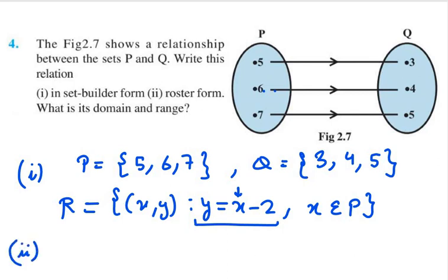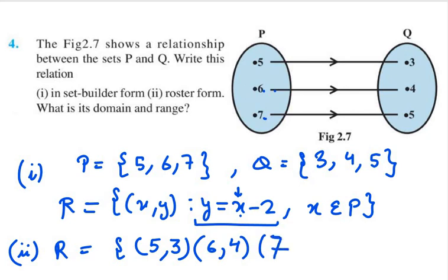Now the second is roster form. Roster form will be in ordered pairs. So when I take x as 5, my y will be 3. 5 minus 2 is 3. The next, if I take x as 6, 6 minus 2 is 4. So (6, 4). Then we have to take 7. 7 minus 2 is 5. So (7, 5).